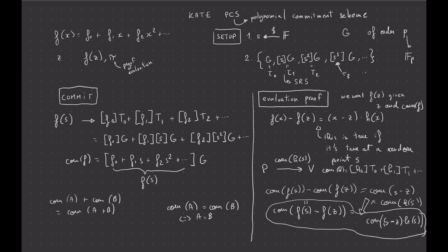And then the verifier will send a random point, and then we'll evaluate the polynomials, or the witness polynomials at these random points.